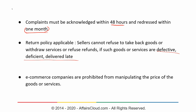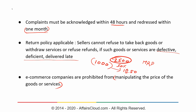A key change regarding e-commerce is that companies are now prohibited from manipulating the price of a good or service in order to gain unfair profit or advantage. You may have noticed that on multiple e-commerce platforms the MRP keeps changing within the same week. For example, if a watch is listed at 1,000 rupees on Monday and changed to 2,500 rupees by Friday, then offered at a 50% discount, you end up paying 1,250 rupees — 250 rupees more than the Monday price — despite it appearing to be a discount. Such price manipulation has been prohibited.